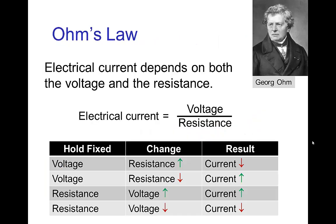We have the concept of resistance: electrical conductors have low resistance, and electrical insulators have high resistance. This is summarized in Ohm's law, which says that the electrical current depends on both the voltage and the resistance. If we hold the voltage fixed and increase the resistance, we have less current. Similarly, if we fix the resistance and increase the voltage, the current increases. If we hold the resistance fixed and drop the voltage, the current drops.